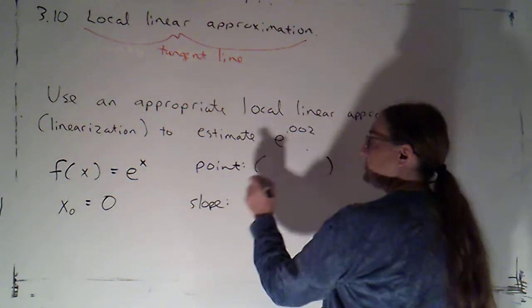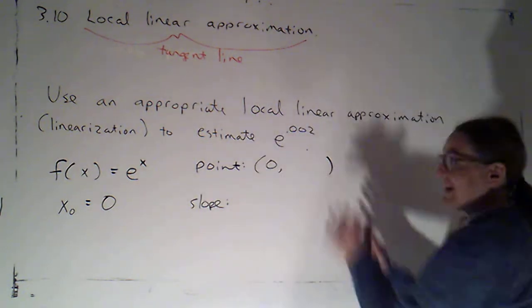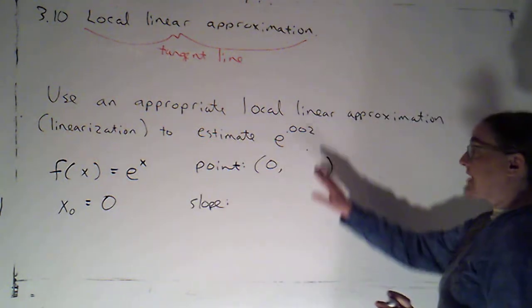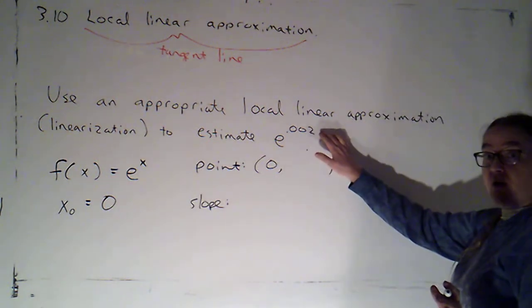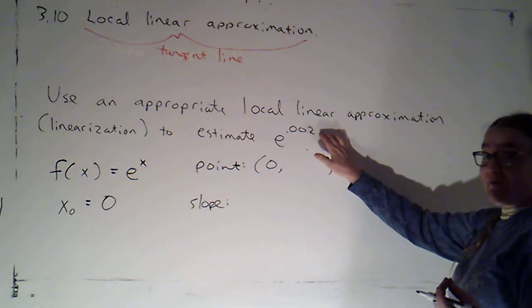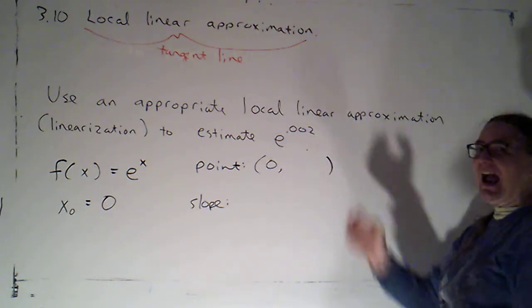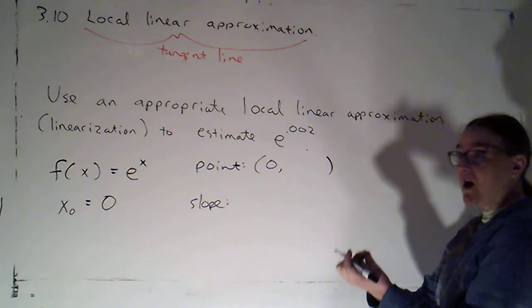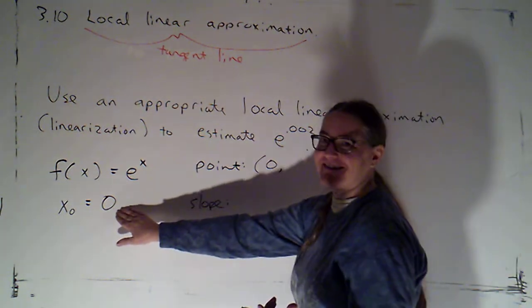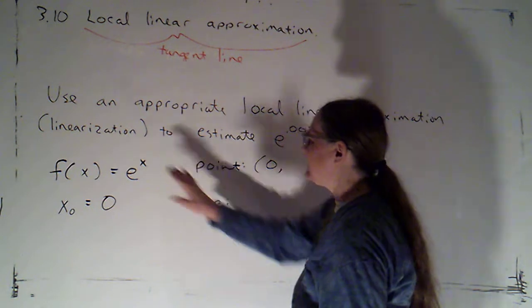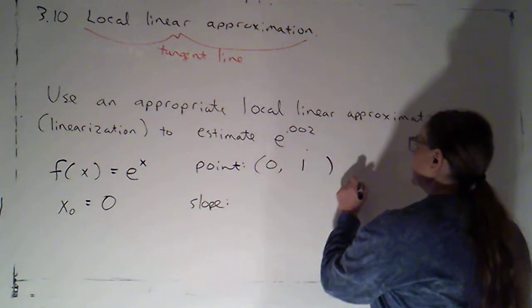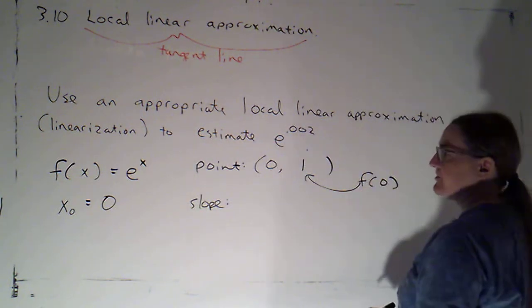For the point, we calculated, we figured the x value. Notice I'm not going to be using 0.002 as my point because there I need to estimate this. I need to know the y value at the point of tangency, and I do. E to the zero is just one, so that's my f of zero.